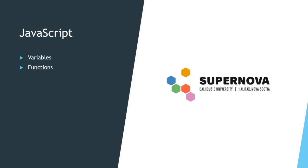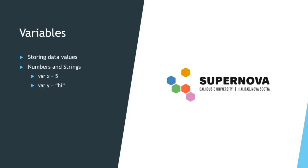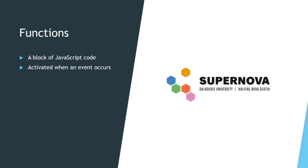There are several components to JavaScript and we'll be learning about variables and functions. Variables can store any type of data values, and we'll be learning how to store numbers and strings. Functions are a block of JavaScript code activated when an event occurs. An event occurs whenever something is triggered — from a user interaction or a pre-programmed trigger such as a time event that can occur hourly or daily.